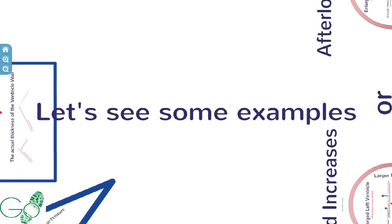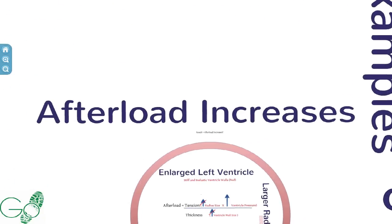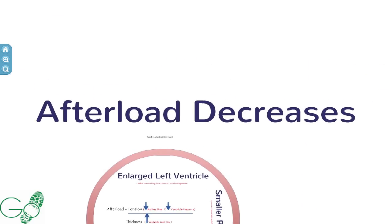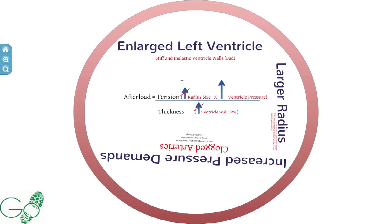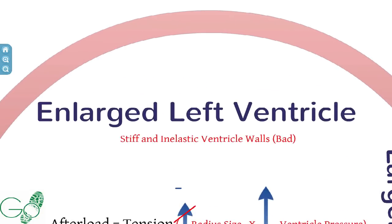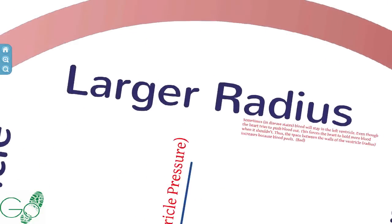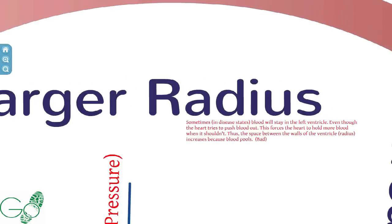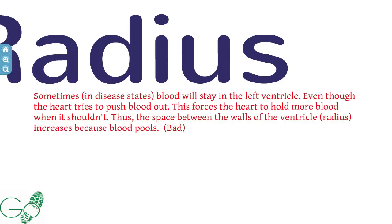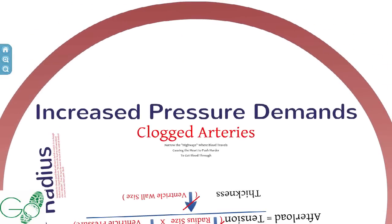Let's work through some examples of when afterload increases or decreases. In the first scenario, the person has an enlarged left ventricle that is stiff and inelastic. They also have a larger ventricular radius, because in disease states blood can pool inside the left ventricle when the heart struggles to push it out. One reason for this is increased pressure demands from clogged arteries.